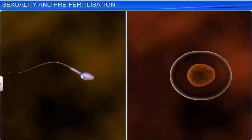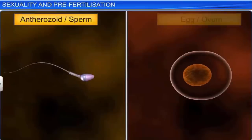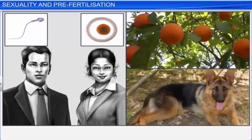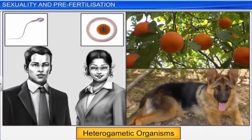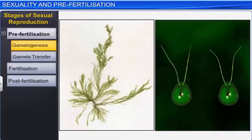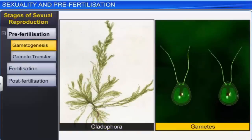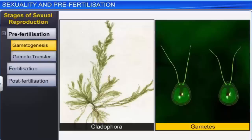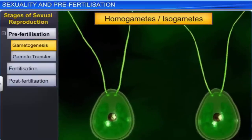Moreover, while the male gamete is called the antherozoid or sperm, the female gamete is called the egg or ovum. Most sexually reproducing organisms, including human beings, are heterogametic, which means their gametes are heterogametes. However, in the case of some algae such as Cladophora, the gametes are so strikingly similar that it is not possible to categorize them as male and female gametes — such gametes are therefore called homogametes or isogametes.